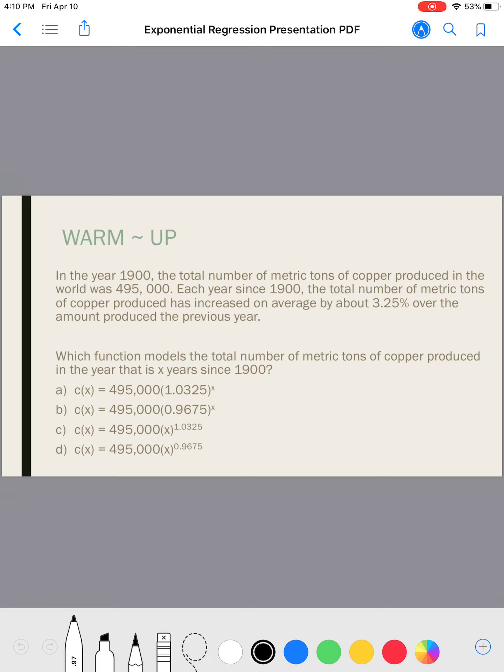Okay. Well, first, I know that an exponential function is Y equals A times B to the power of X. So we need to find our A value and we need to find our B value. We want to know how much we started with, how much copper we started with, and it's since 1900. So since 1900, we started with 495,000. That starting amount is our A value, because that's our Y intercept. So our A value will be 495,000.